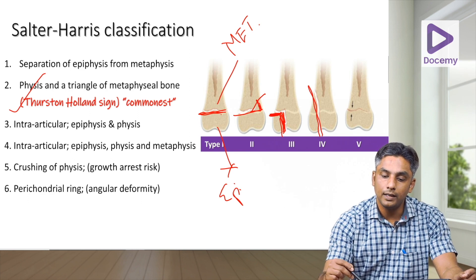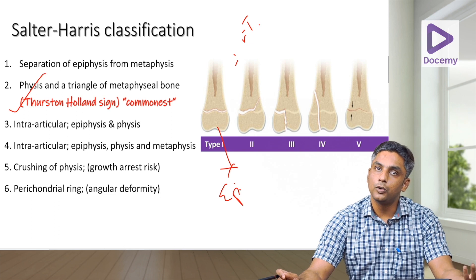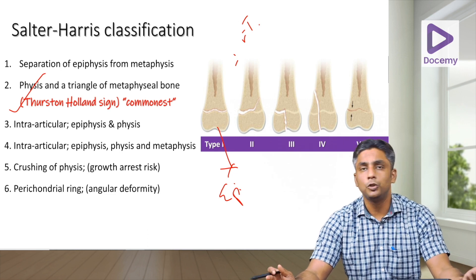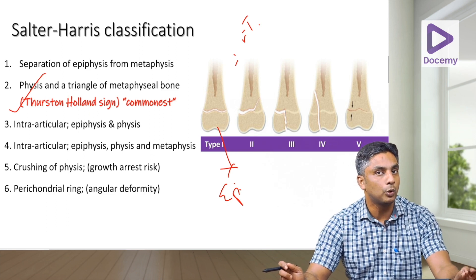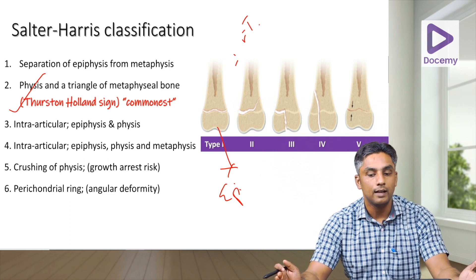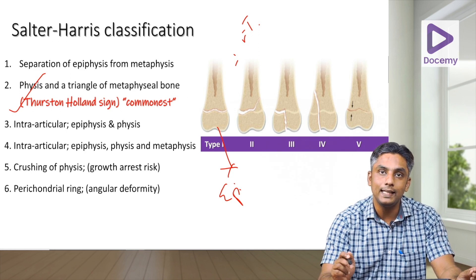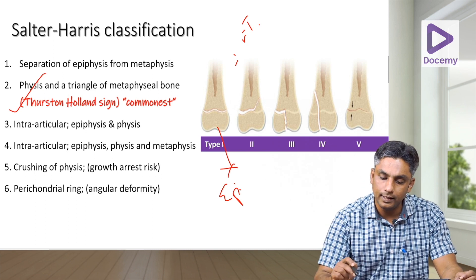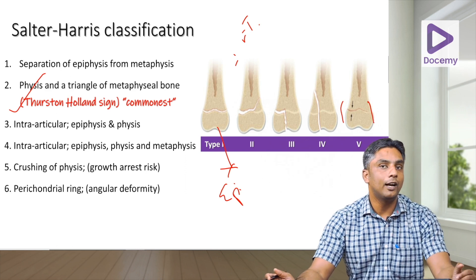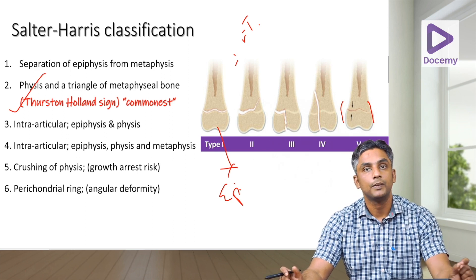Type 5 is a crushing injury of the physis and has the highest risk for growth arrest. Physeal injuries in children can result in growth arrest or angular deformities such as cubitus valgus, genu valgus, or genu varum. Type 5 is similar to type 1 in that it's not well-demonstrated on x-rays, but is more severe. Type 6, added by Rang, involves injury to the perichondral ring of LaCroix, which can result in angular deformity.